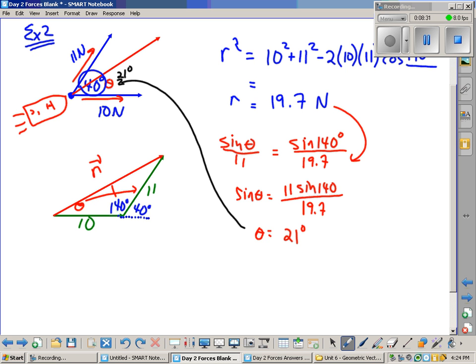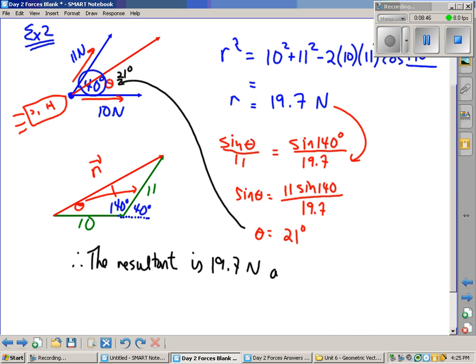We'll now answer the question and figure out what the resultant is. So therefore, the resultant is 19.7 newtons at an angle of 21 degrees...